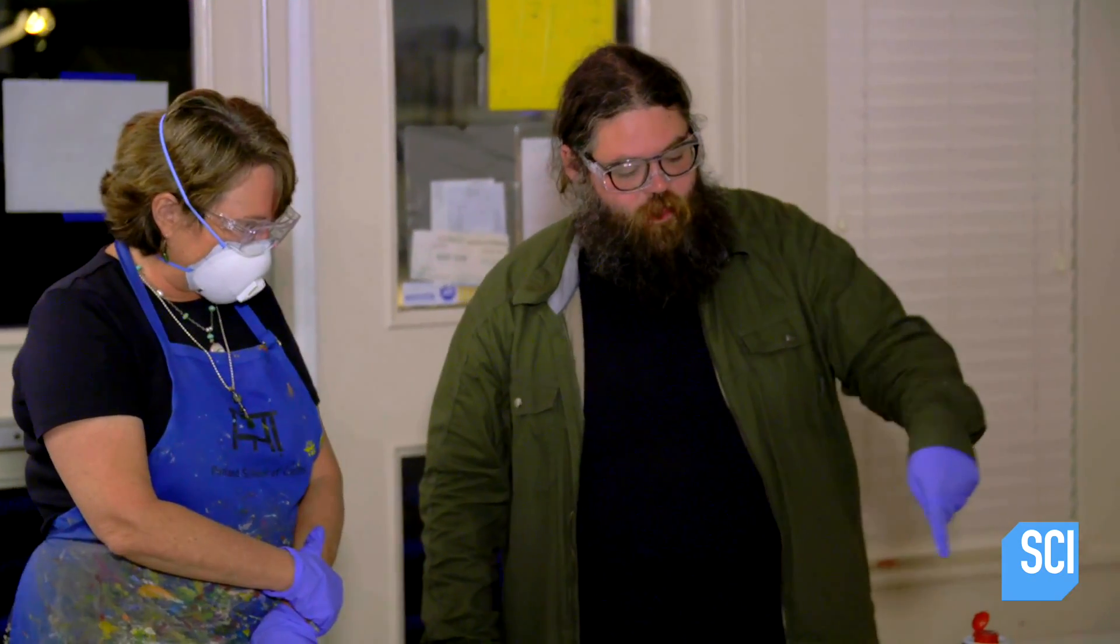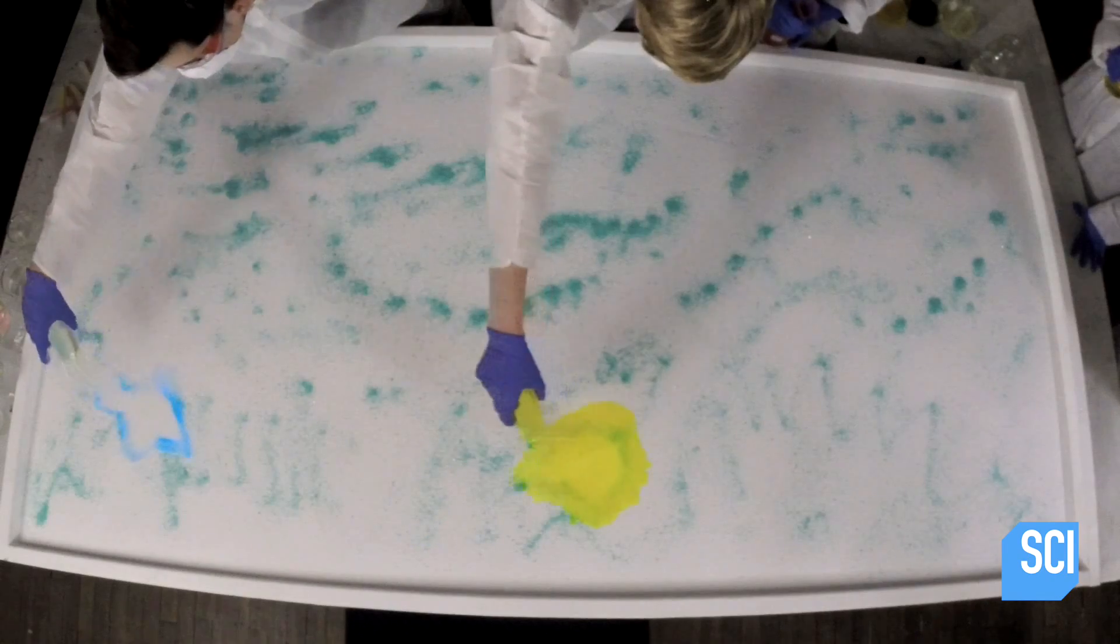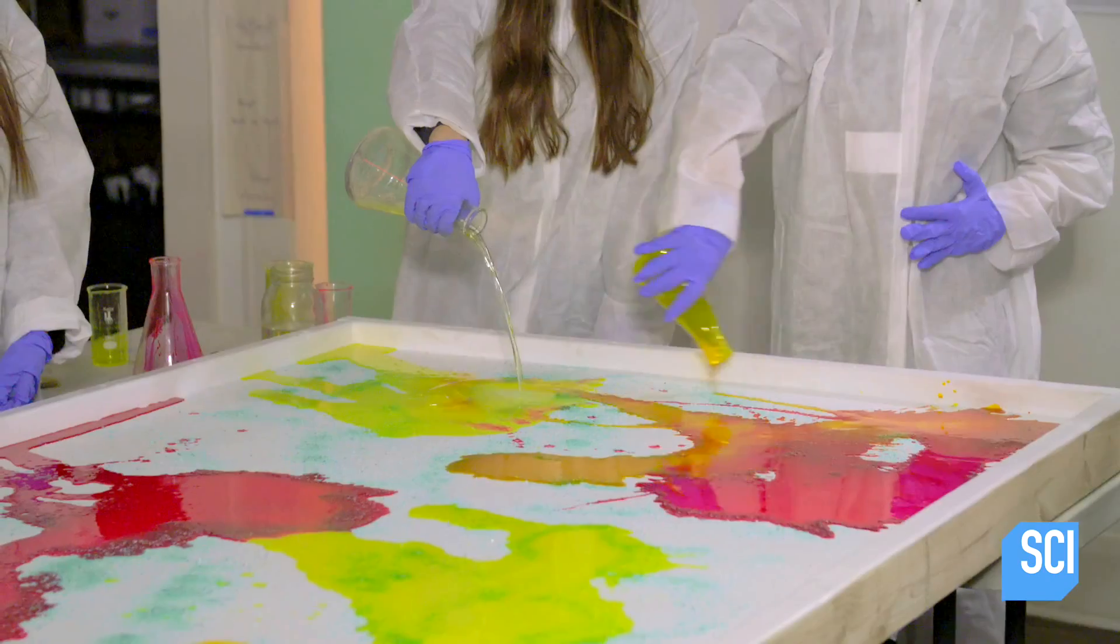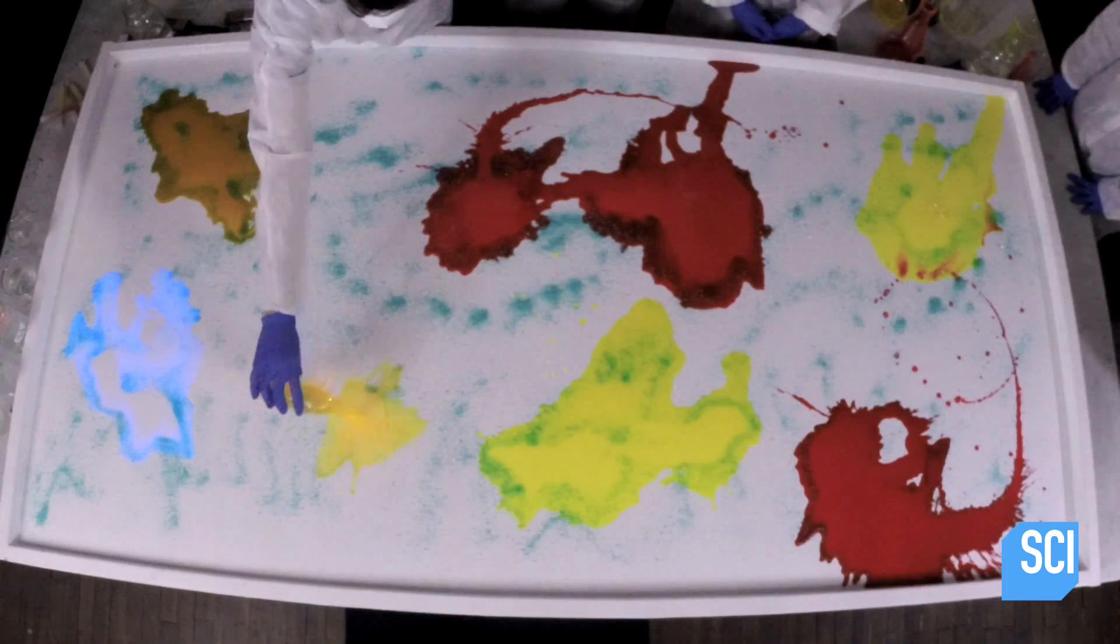So the next step is pouring out all these dyes on the table. This is the same dye and phenyloxylate ester solution found inside of a glow stick's inner glass capsule.